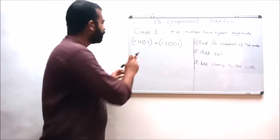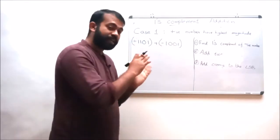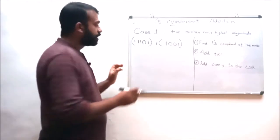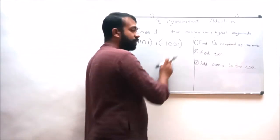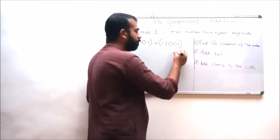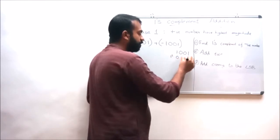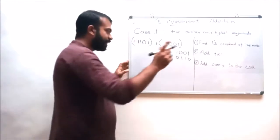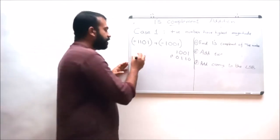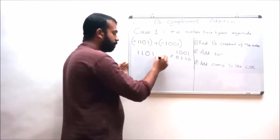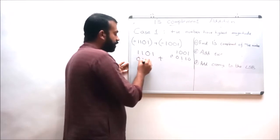Our first example is: add 1101 with minus 1001. We are not considering the signs directly. As per rule one, we first convert 1001 into its ones complement equivalent. The ones complement of 1001 is 0110. The second step is to add this ones complement with the highest magnitude positive number: 1101 plus 0110.